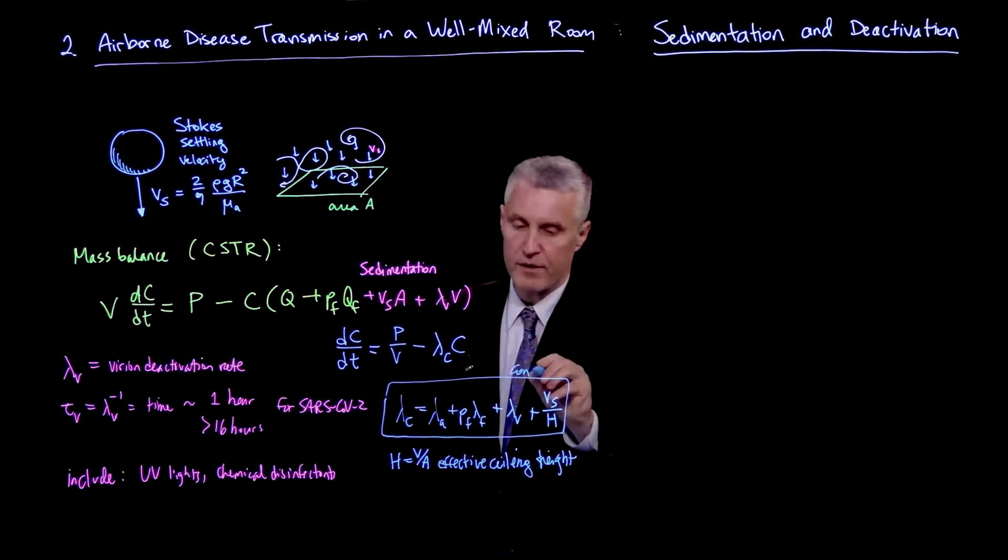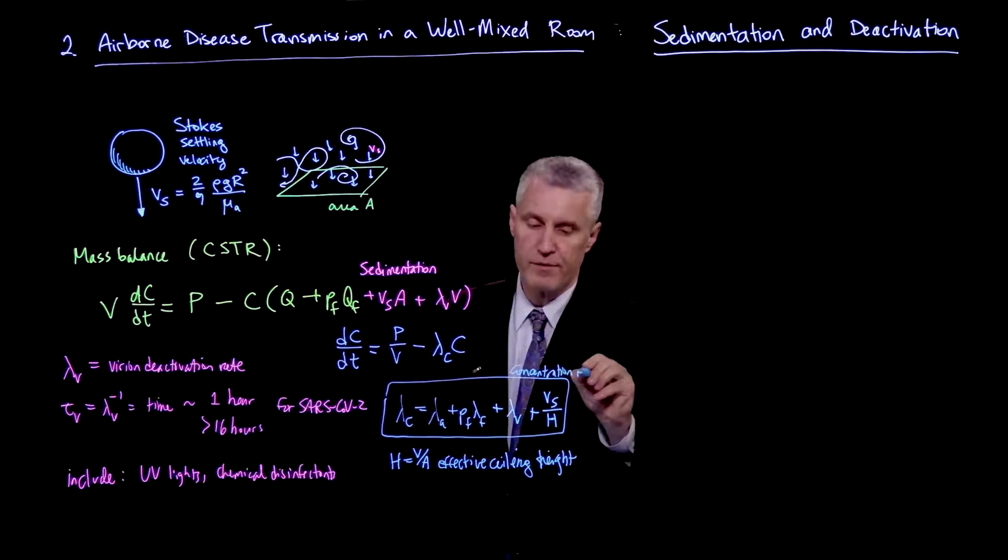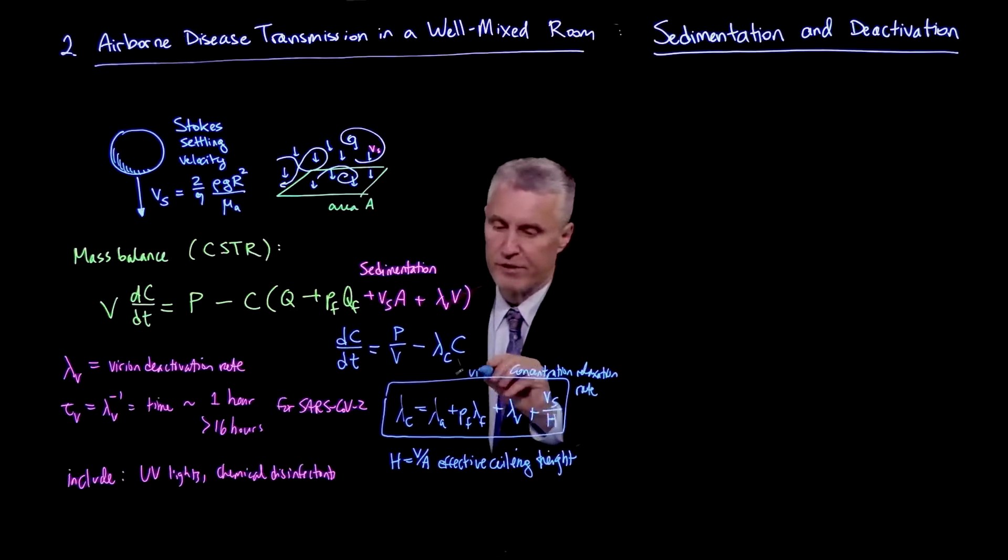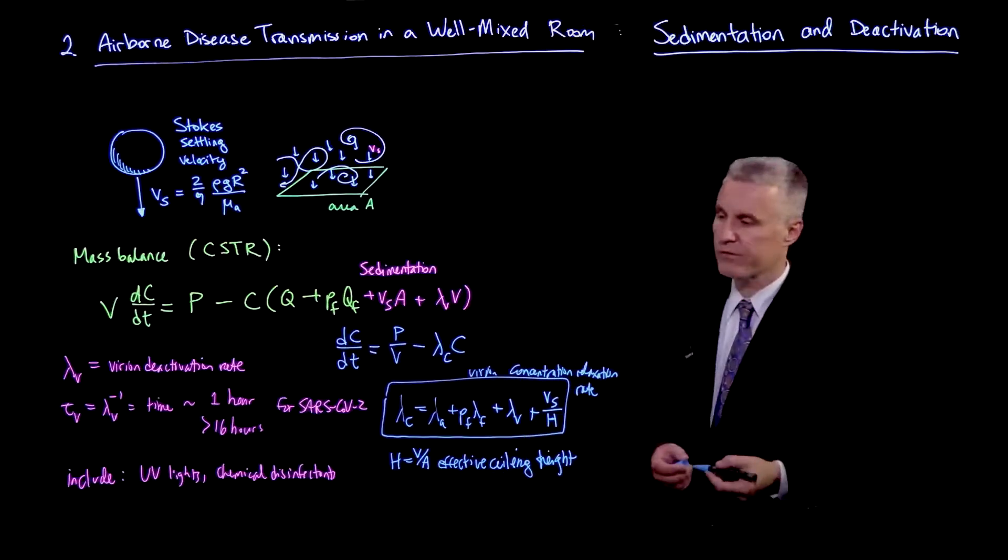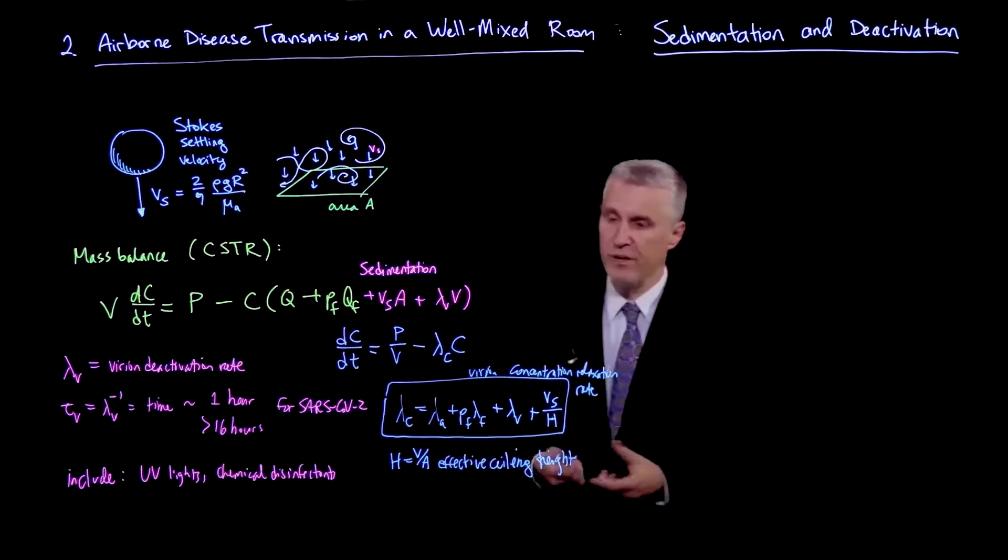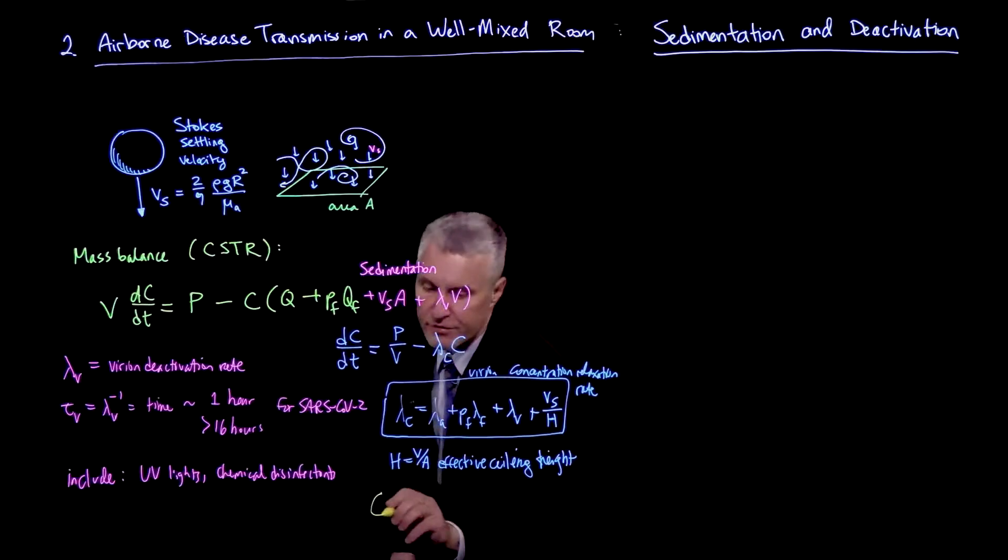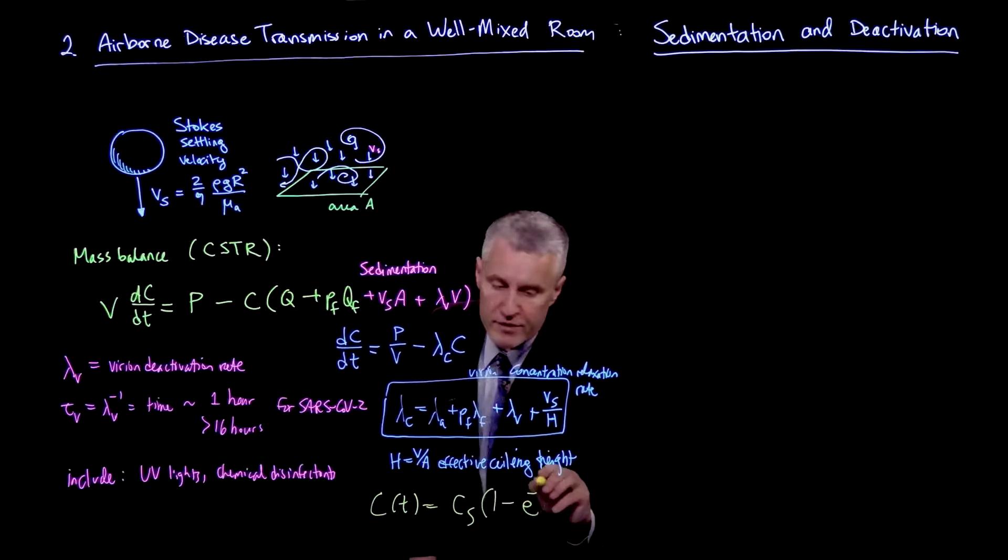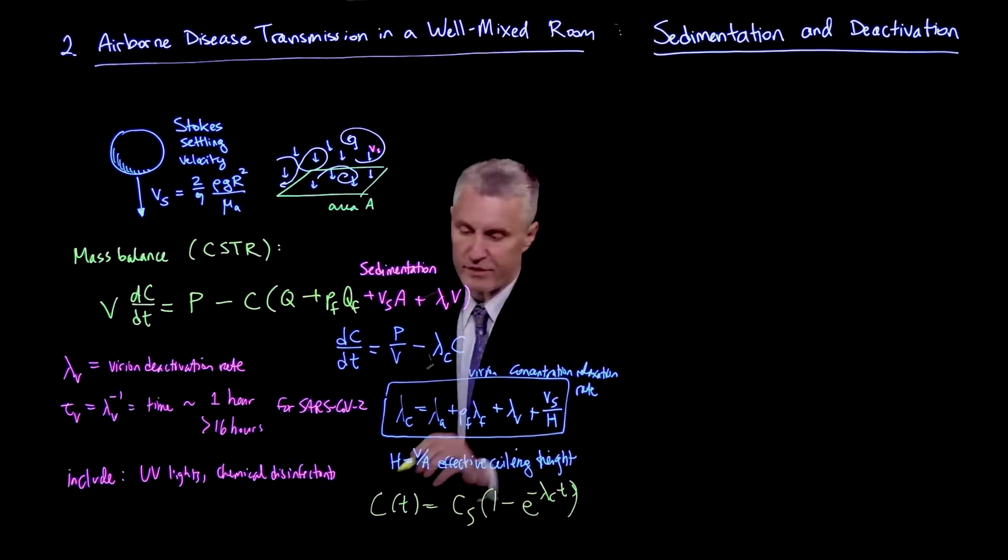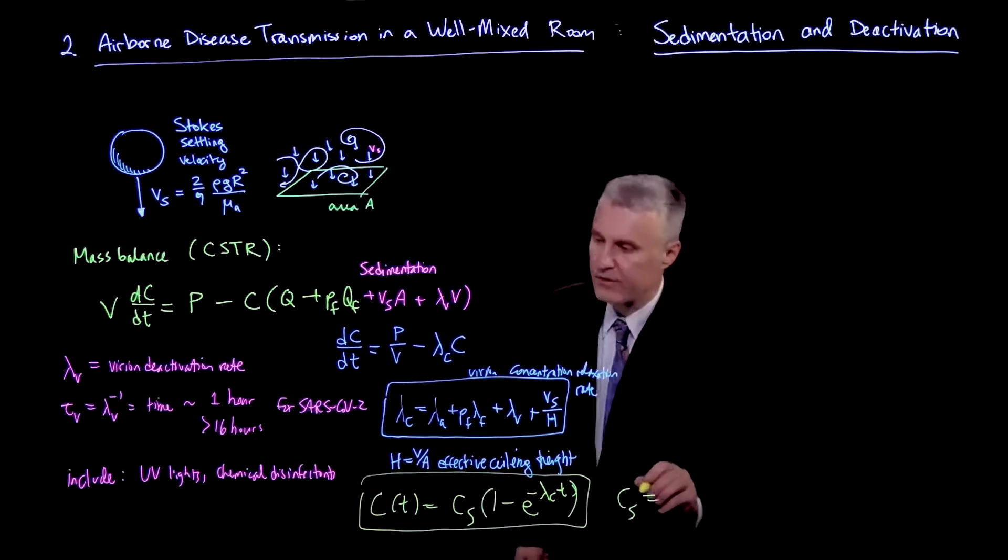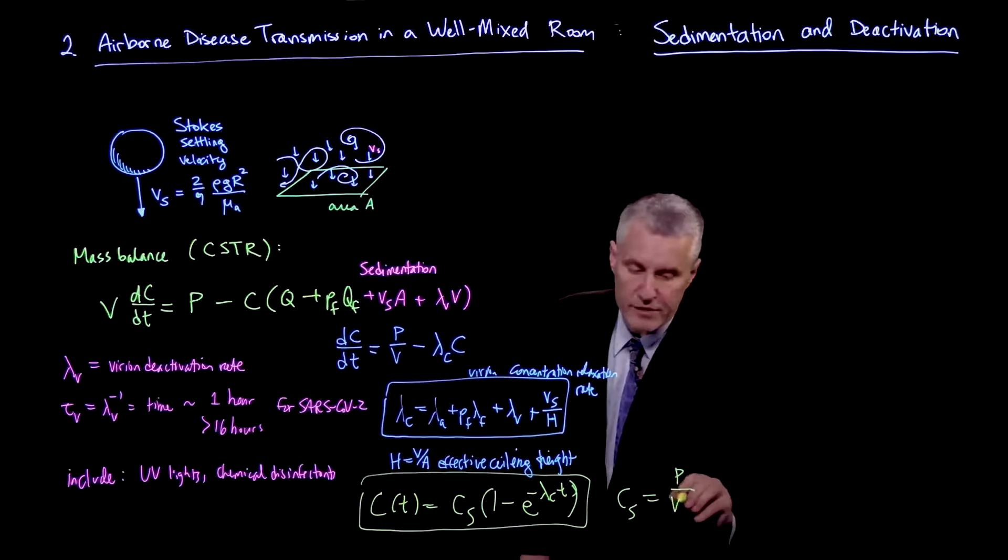So this is the concentration relaxation rate, the virion concentration in the air, which is relaxing at this rate, lambda_C. And then we come back to solving the same simple ordinary differential equation that we've done all along. And the solution is just C(t) is a steady state value times 1 minus e to the minus lambda_C*t.